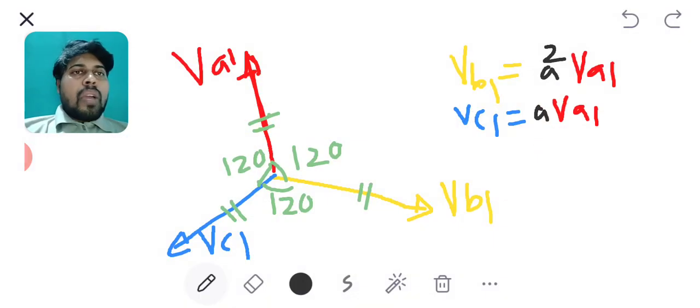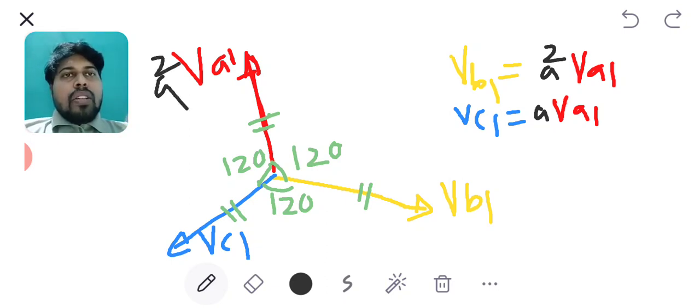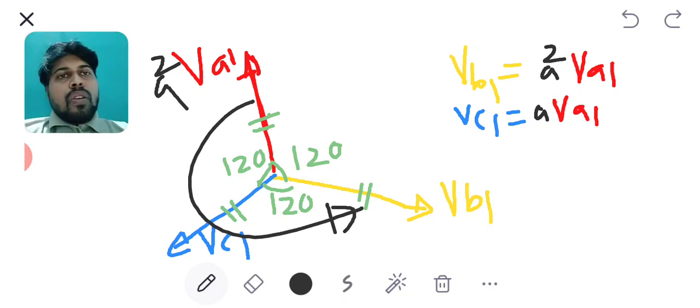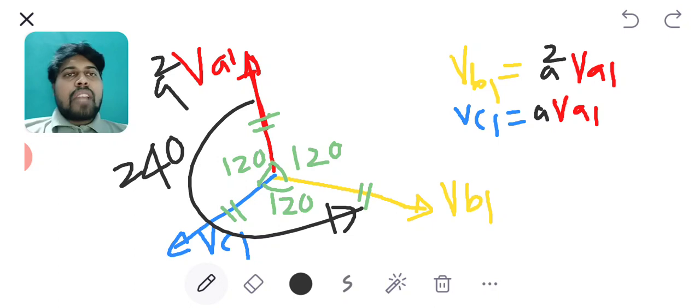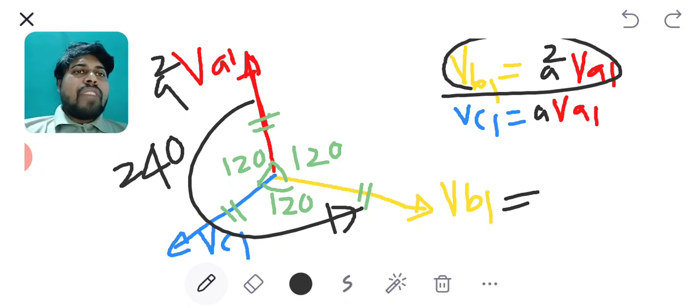Further I also have the positive symmetrical components. So I can express Vb1 as well as Vc1 in terms of Va1 by the use of A operator. If I multiply by A² to phasor Va1 that will take a rotation of 240 degrees in anti-clockwise direction and it will reach a position of Vb1. So I can write Vb1 as A² Va1.